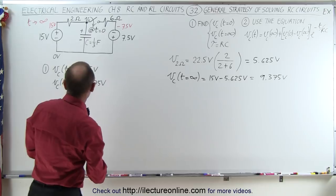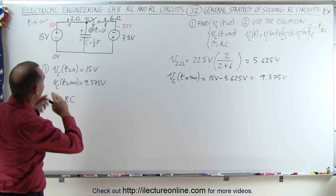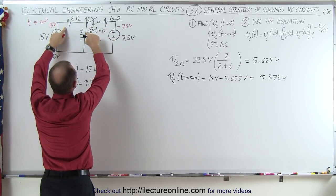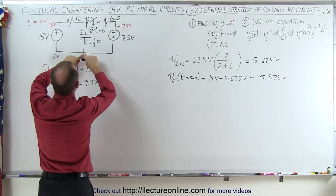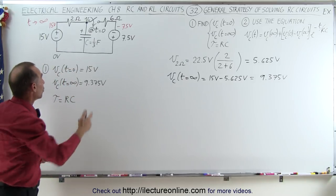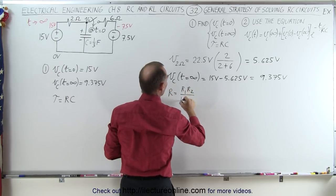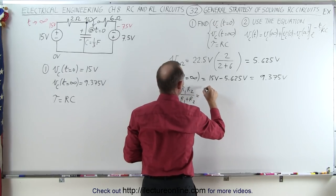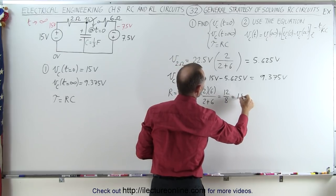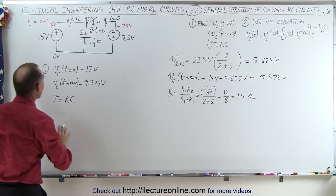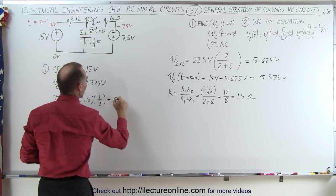Next we need to find the time constant, which equals the resistance times the capacitance. The resistance in this circuit: we have one resistor here and one resistor there with the capacitor. As the capacitor charges, these two resistors are basically in parallel relative to the capacitor. The equivalent resistance is the product over the sum: two times six divided by two plus six equals 12 divided by 8, which is 1.5 ohms.